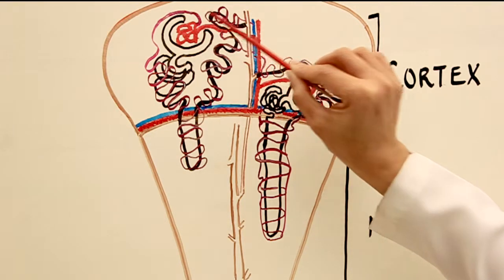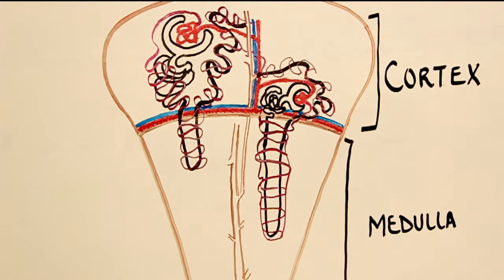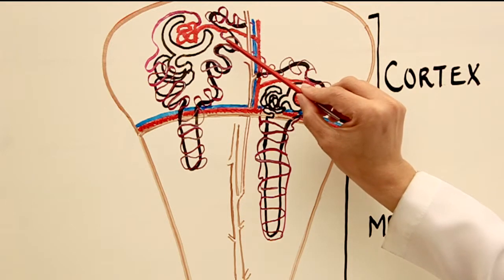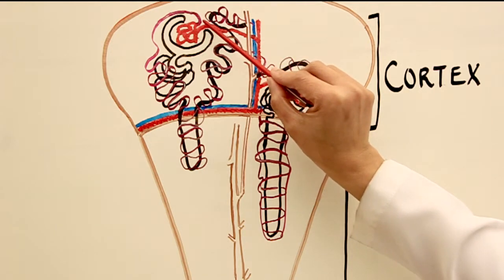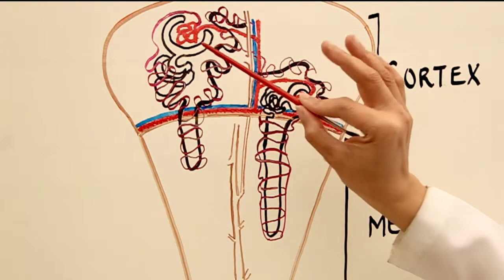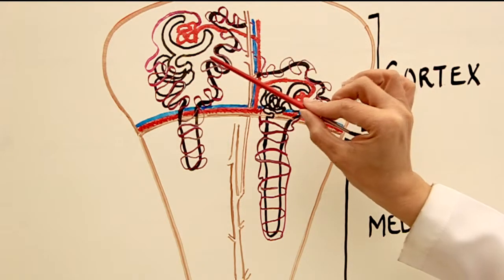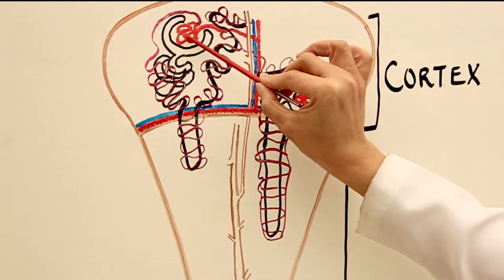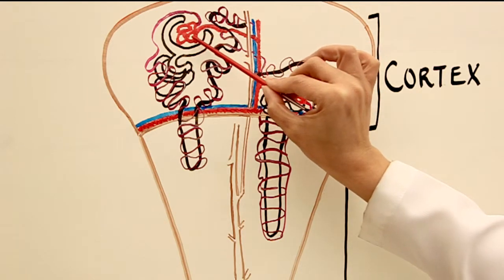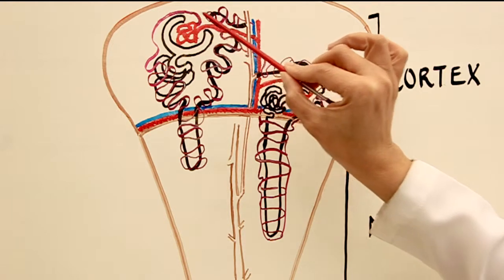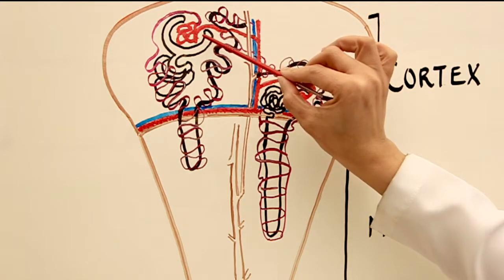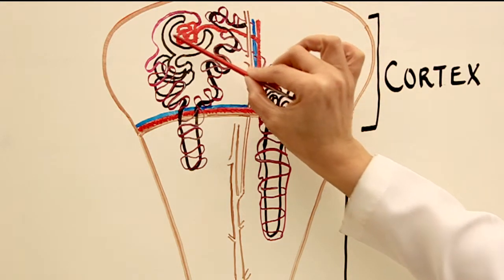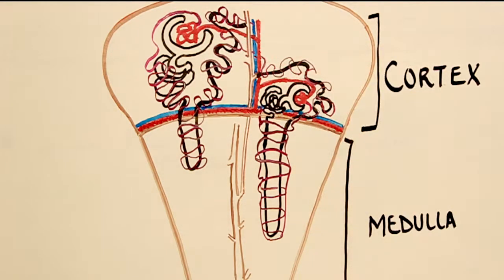Arterioles are high-resistance vessels, and the afferent arteriole has a larger diameter than the efferent arteriole, as you can see here. Therefore, due to this arrangement, the blood pressure within the glomerulus is extraordinarily high. This high pressure easily forces fluid and solutes out of the blood into the capsular space, also known as the filtration space or urinary space.